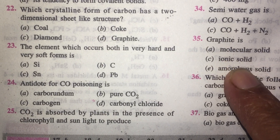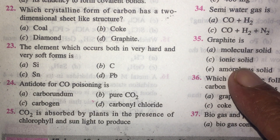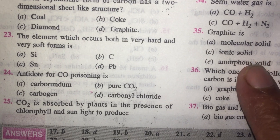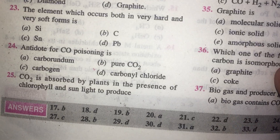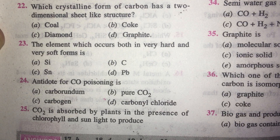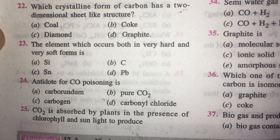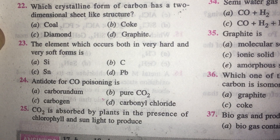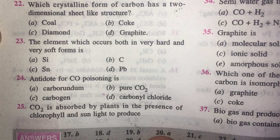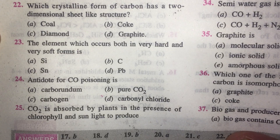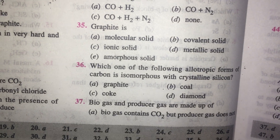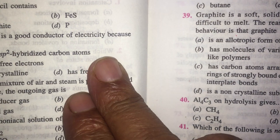The element which occurs both in a very hard and very soft form is obviously carbon: graphite is the soft form and diamond is the hard form. The antidote for carbon monoxide poisoning is carbogen, a mixture of carbon dioxide and oxygen. CO2 is absorbed by plants in the presence of chlorophyll and sunlight to produce starch — this is the standard photosynthesis reaction, which can produce cellulose, starch, and glucose. Answer is all of A, B, C.